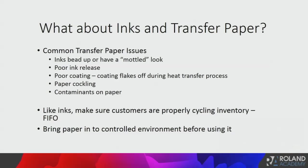Common paper issues: inks bead up or have a mottled look when you have too much ink and the paper can't hold it. Number one issue is poor ink release — you have the correct color profile but you're seeing a lot of ink still left over after sublimation compared to a better paper with the same temperature settings and dwell time. A poor coating or uneven coating is another issue — the coating may flake off, or there may be no coating in one spot, so after you sublimate, one spot just won't release the ink. Paper cockling happens because it can't handle the ink load. Contaminants on the paper mean you think you're printing on paper but you're actually printing on dirt and debris. You always get what you pay for. Just like inks, there is a shelf life for the paper's coating — FIFO, first in, first out.